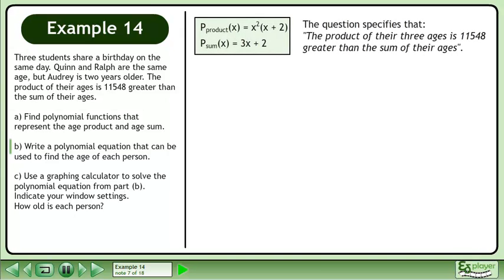The question specifies that the product of the three ages is 11,548 greater than the sum of their ages. The product of the ages equals the sum of the ages plus 11,548.